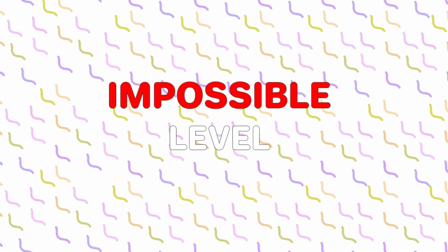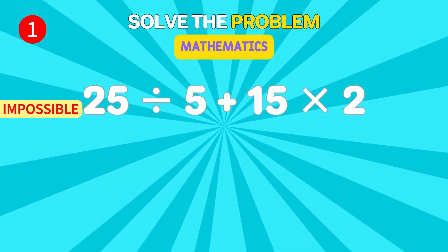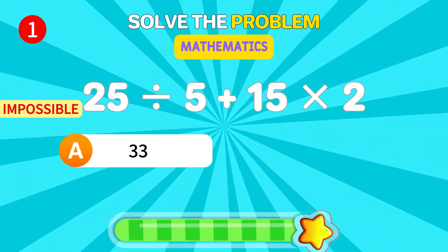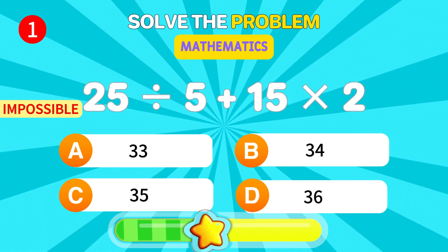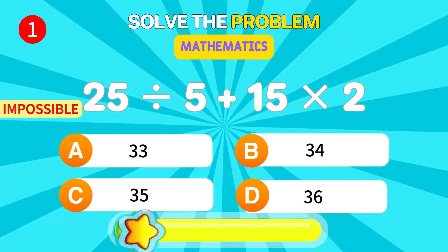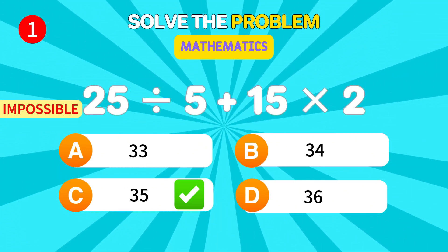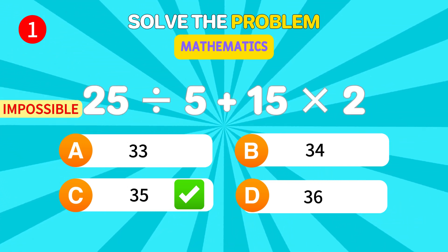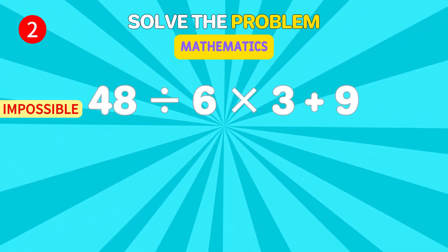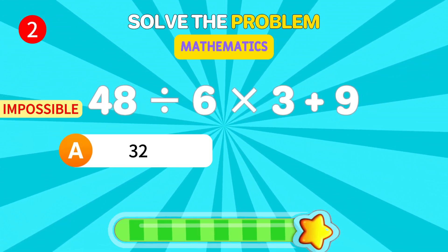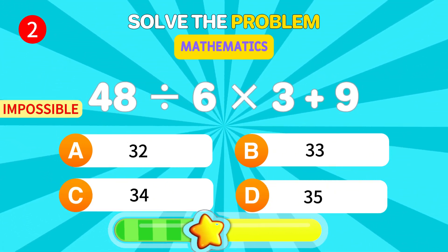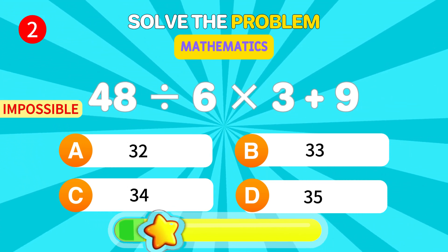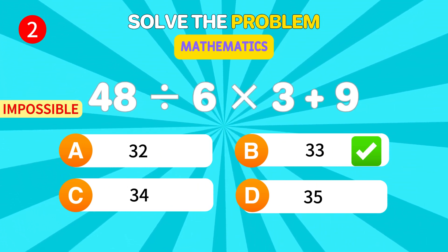Only legends can conquer the impossible level. What is 25 divided by 5, then add 15 times 2? 35. Legendary. Solve this. 48 divided by 6 times 3 plus 9. 33. Genius.